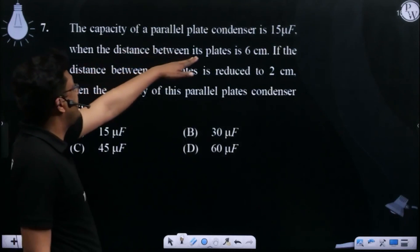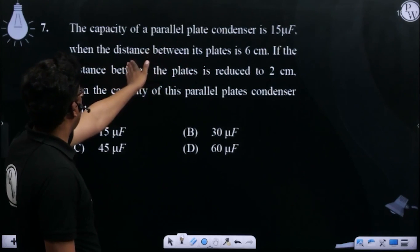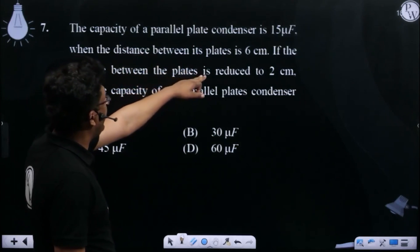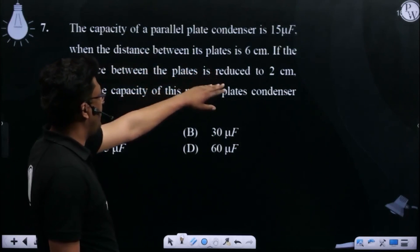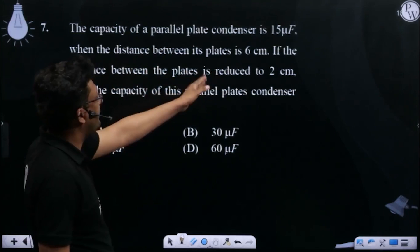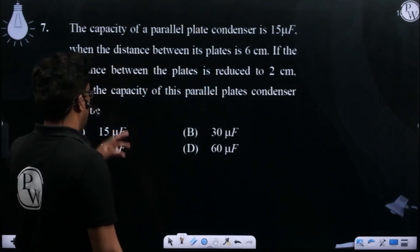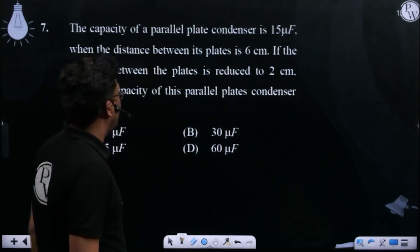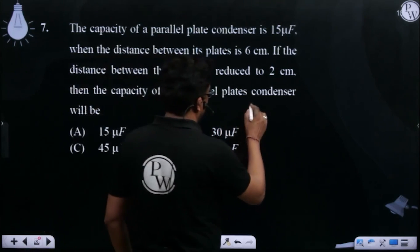The capacity of a parallel plate capacitor is 15 microfarad when the distance between the plates is 6 centimeters. If the distance between the plates is reduced to 2 centimeters, then what is the capacity of this parallel plate capacitor?